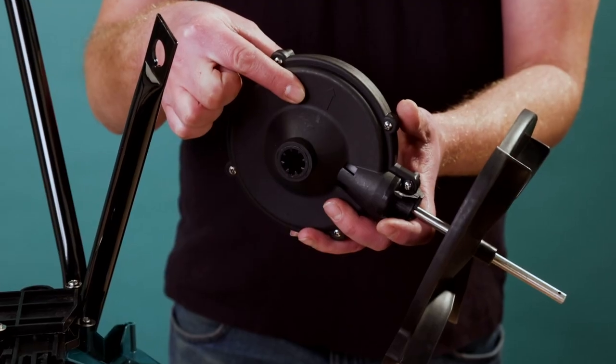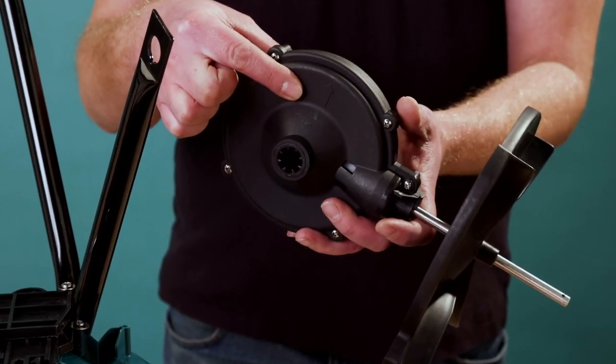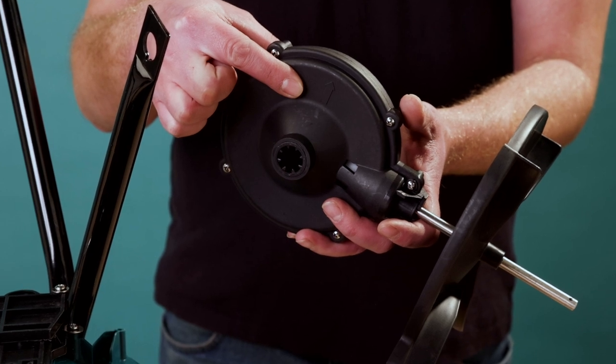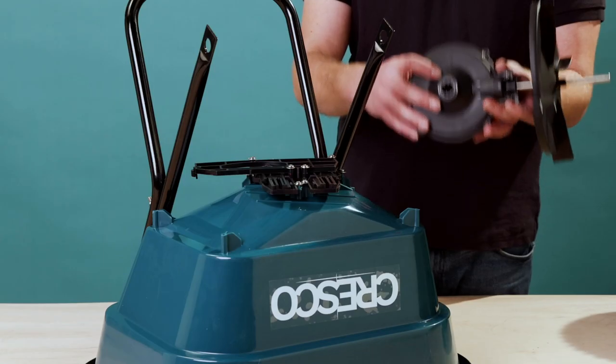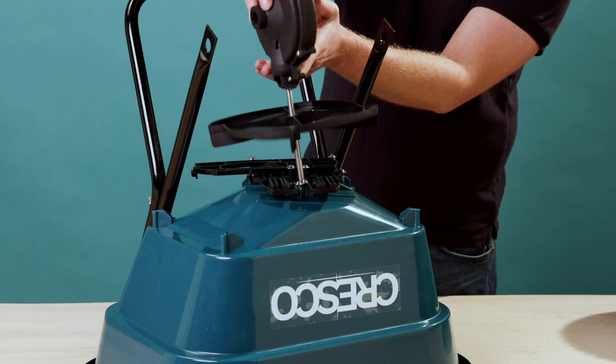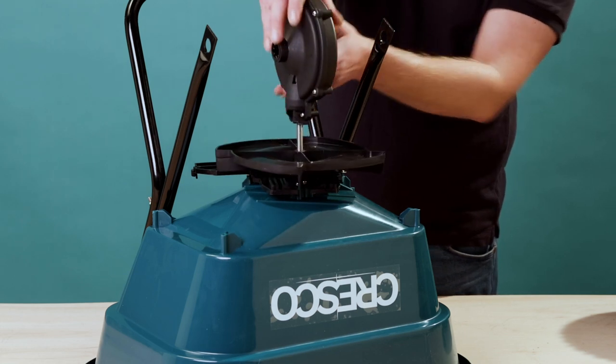Make sure the arrow on the gearbox faces forwards. The arrow should point away from the stand. Place the gearbox and impeller in the center hole of the hopper body and let it rest there.